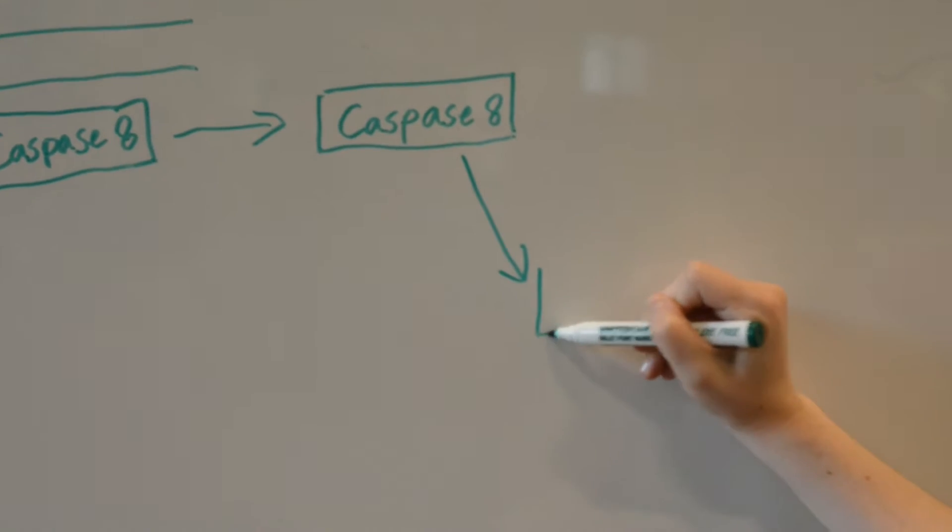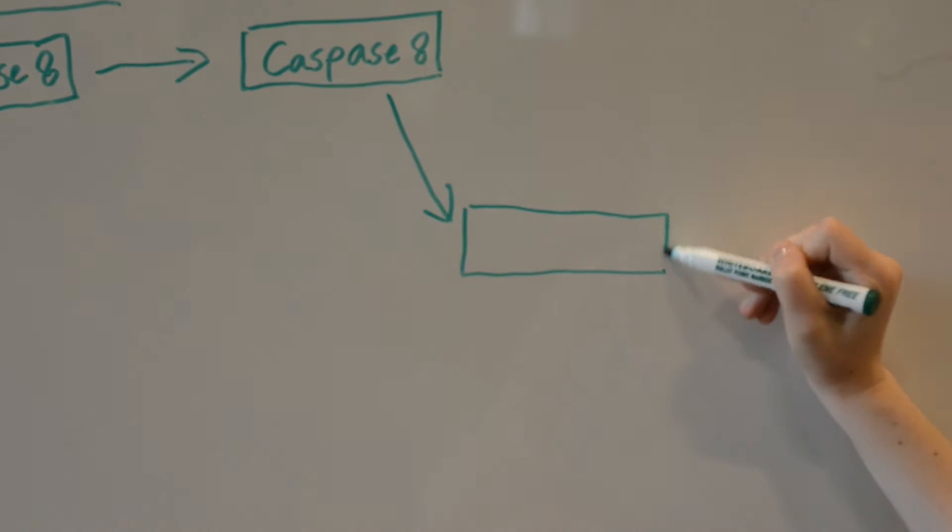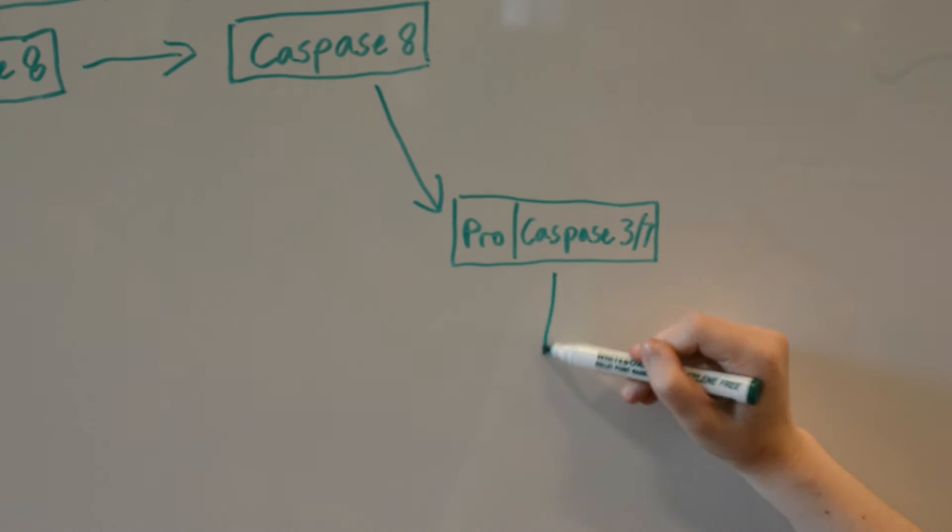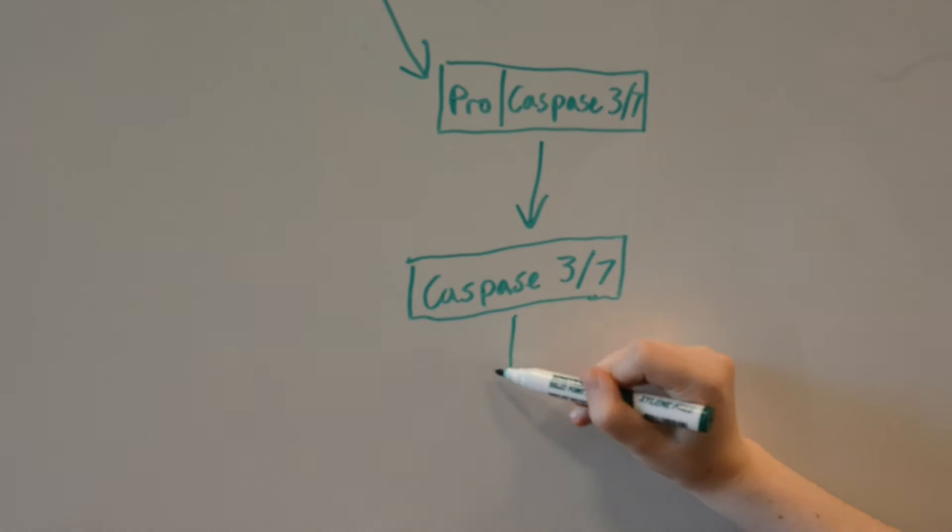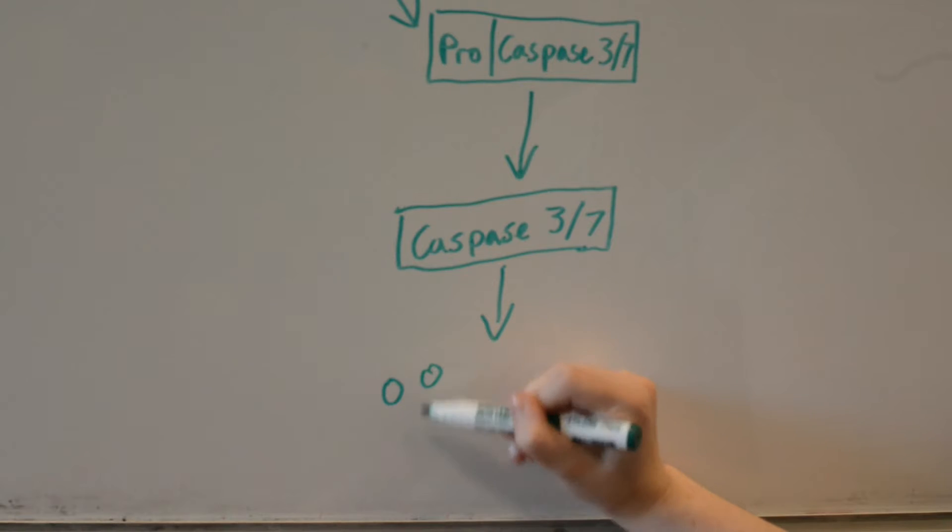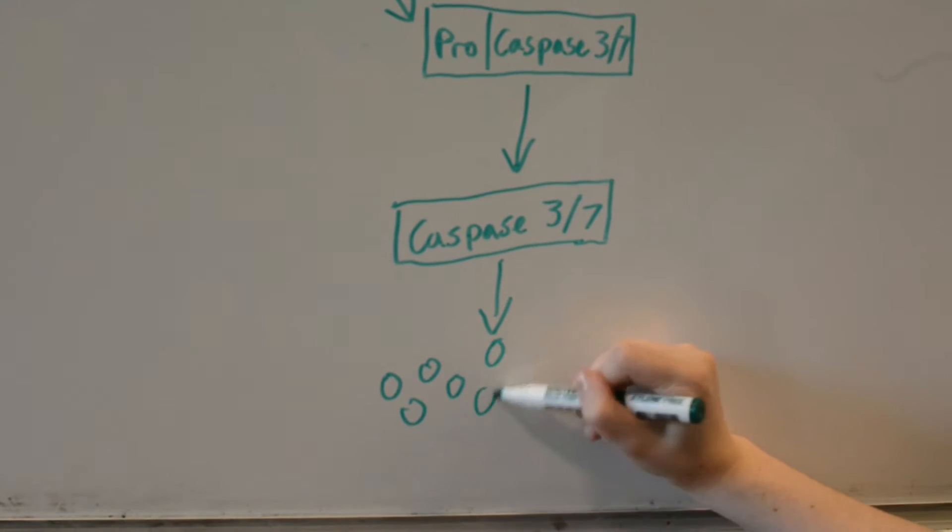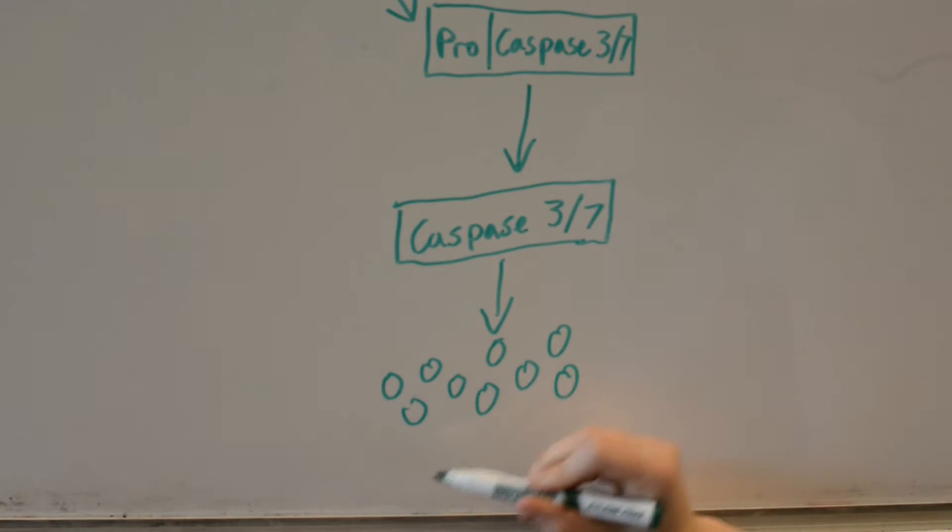Caspase 8 then proteolytically cleaves procaspase 3 or procaspase 7 to form activated caspase 3 and caspase 7. This triggers the activation of the death substrates that lead to apoptosis.